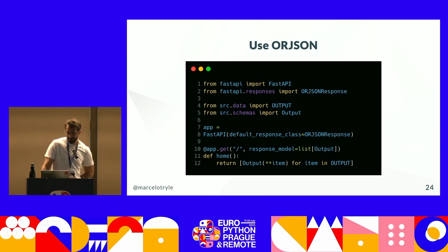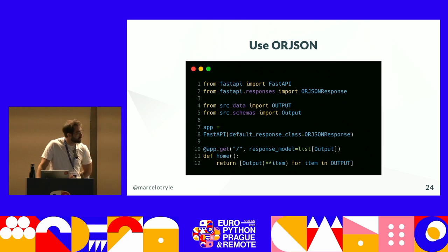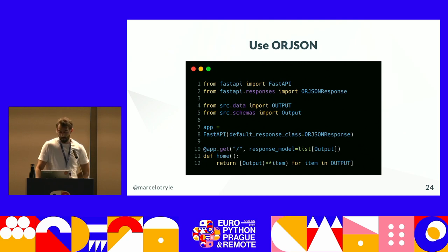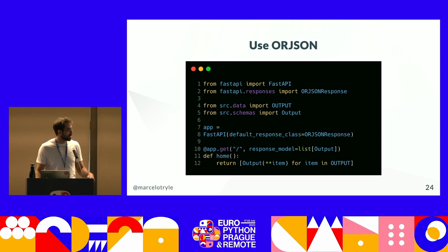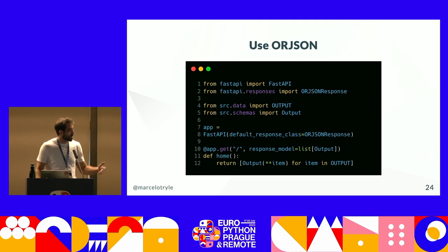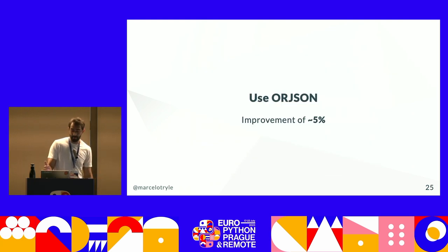Another change is adding the default response class using ORJSON to serialize the response. On this application, since we're validating models on line 12 and then FastAPI revalidates them on line 10, the serialization is just a small part. With this application I get about a 5% improvement, but again, there is an improvement.